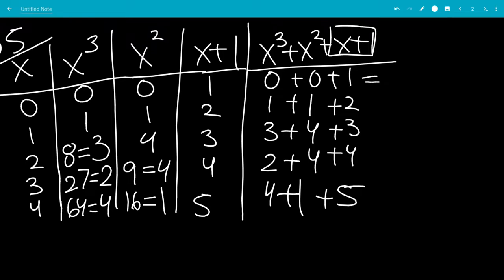Okay, so the first one will be 1, the second one will be 1 plus 1 plus 2, which is 4. The third one will be 3 plus 4 is 7, plus 3 is 10. But 10 is congruent to 0 mod 5, because 10 minus 5 minus 5 is 0. 2 plus 4 is 6, plus 4 is 10, congruent to 0 mod 5. And 4 plus 1 plus 5 is also 10, which is congruent to 0 mod 5.